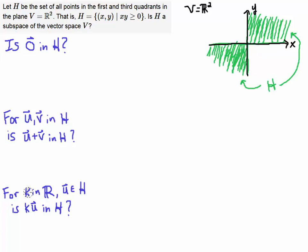And then we want to know for any scalar K in R, which is our real number, so for any number K and any U in H, that means any vector in one of these two quadrants, is K times U also in the set H.